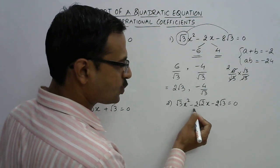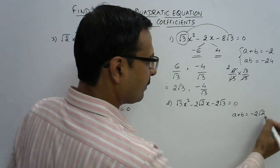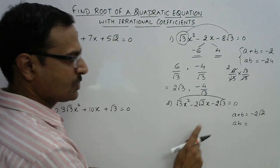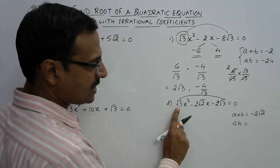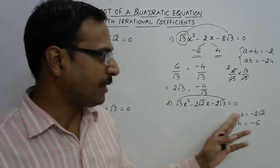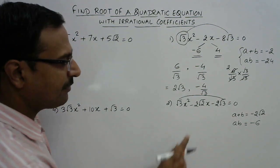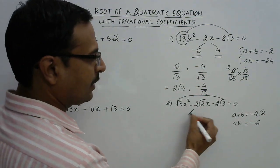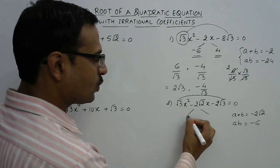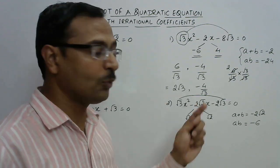In the second question, the coefficient of x is minus 2√2. I need two numbers whose sum is minus 2√2 and whose product is the product of the two outer coefficients. That gives √3 × √3 = 3, then 3 × 2 = 6, so the product is minus 6. Now I need two numbers whose sum is minus 2√2 and product is minus 6. If we have √2 in both factors, then √2 will appear in the sum as well.